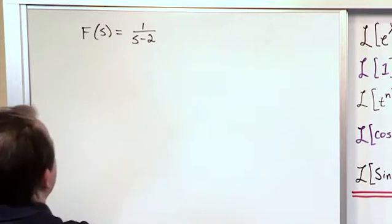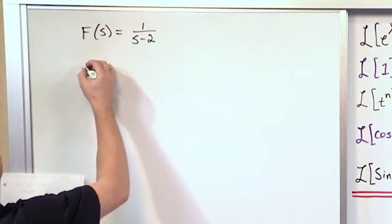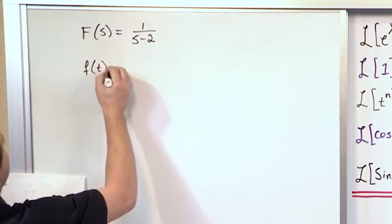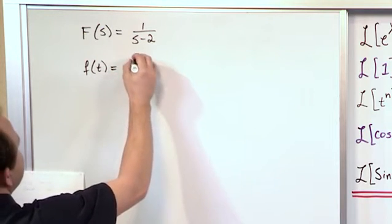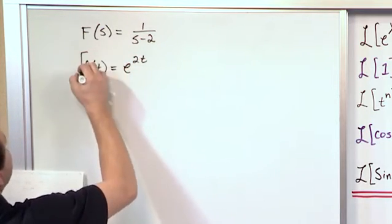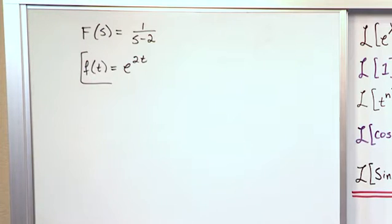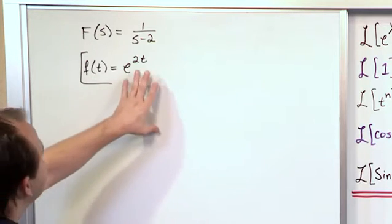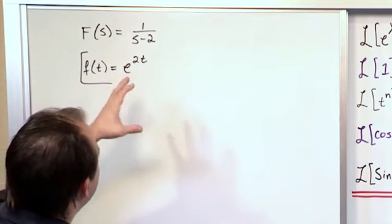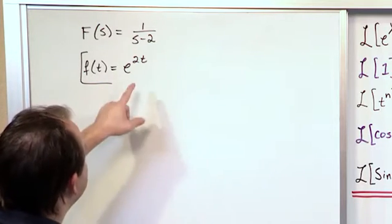So without really doing any work at all, you can just write down the f(t) that corresponds to this is e to the 2t. The hardest part of inverting a transform is just making sure not to have any oversight or careless errors.